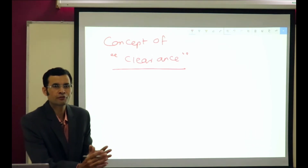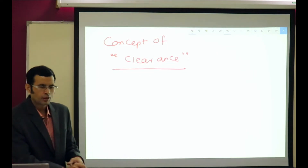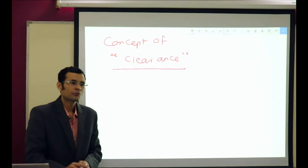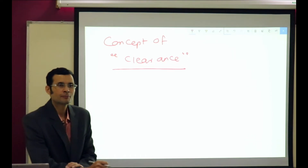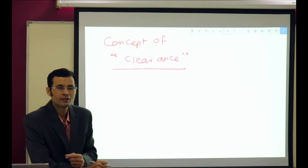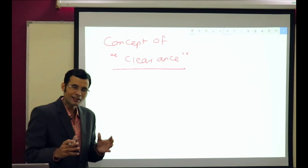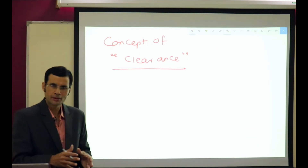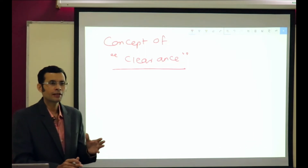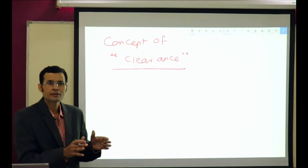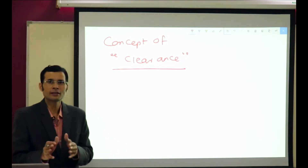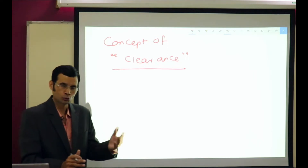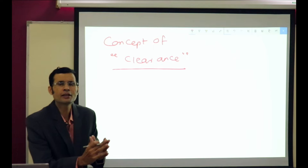Let's try to understand the concept of clearance. By definition, it sounds a very complicated concept. The definition of clearance says that it is the theoretical volume of plasma — or the hypothetical or notional volume of plasma — which is completely cleared of a substance per unit time. What it probably means is that the kidney is clearing a substance from the plasma, taking one liter of plasma and removing the substance completely, then the next liter, and so on.